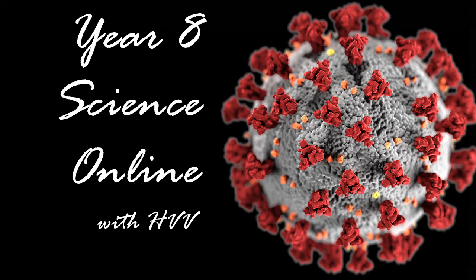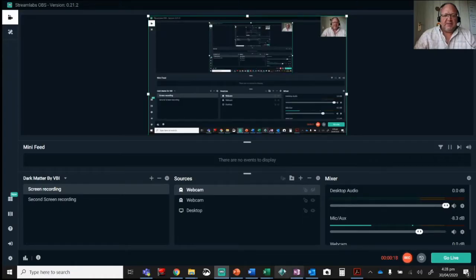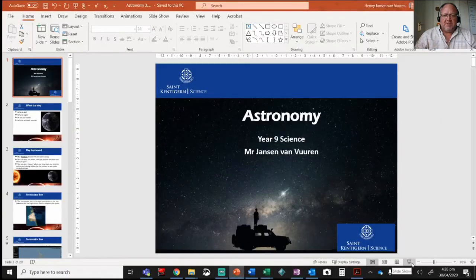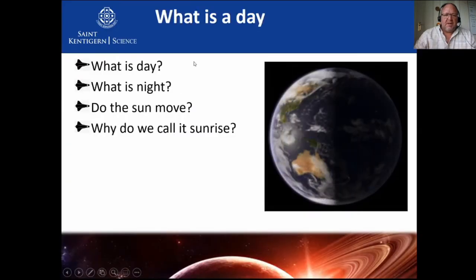Okay, welcome to Year 8 science online with Henny van Fieren. Hello Year 8s, welcome back to another lesson on astronomy. Today we're going to do a quick lesson looking at our orbit around the Sun and what it actually means for us. So without further ado, let's jump back into the presentation.